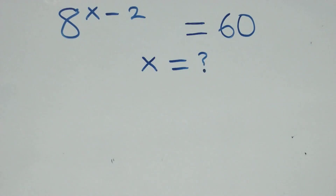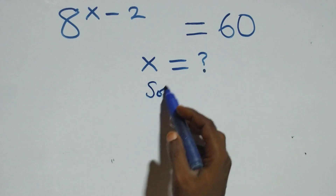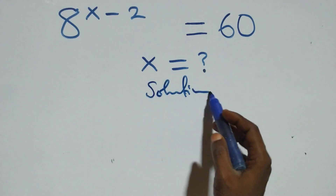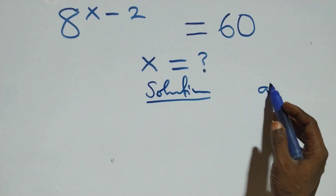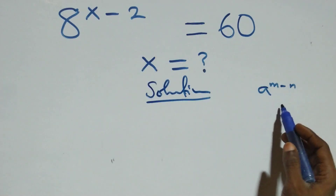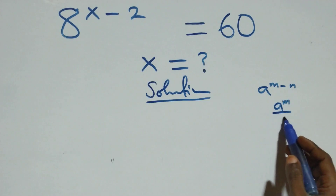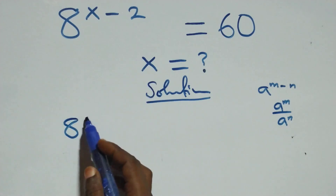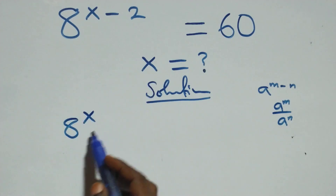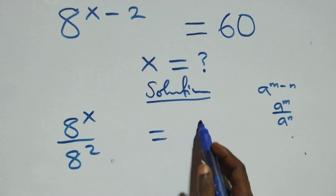Hello, welcome. Here we solve a nice exponential equation. We apply the rule that a raised to power m minus n equals a raised to power m over a raised to power n. So the expression becomes a raised to power x over eight squared equals sixty.